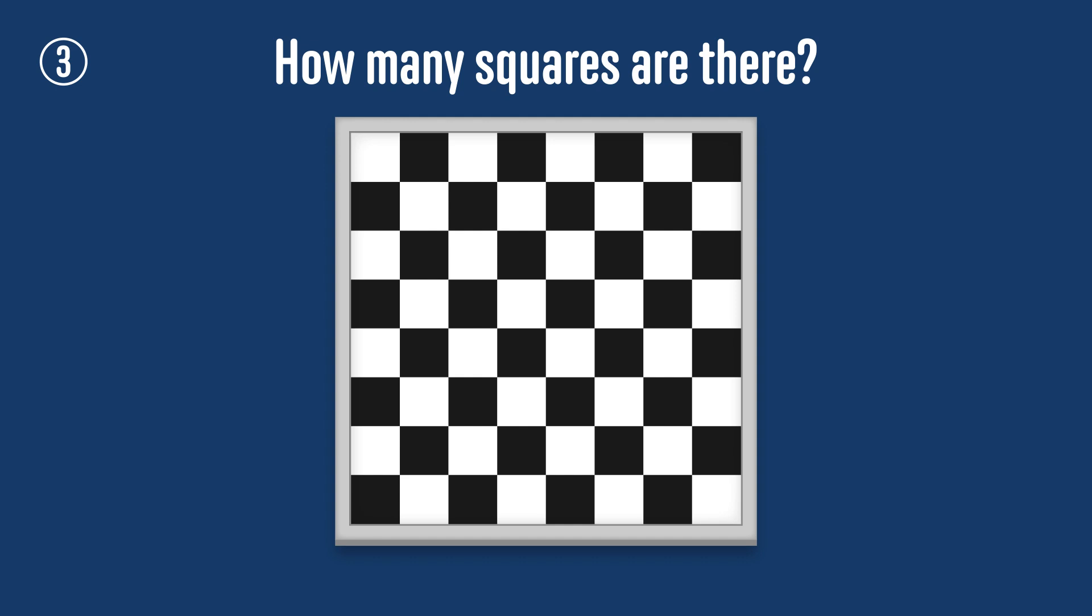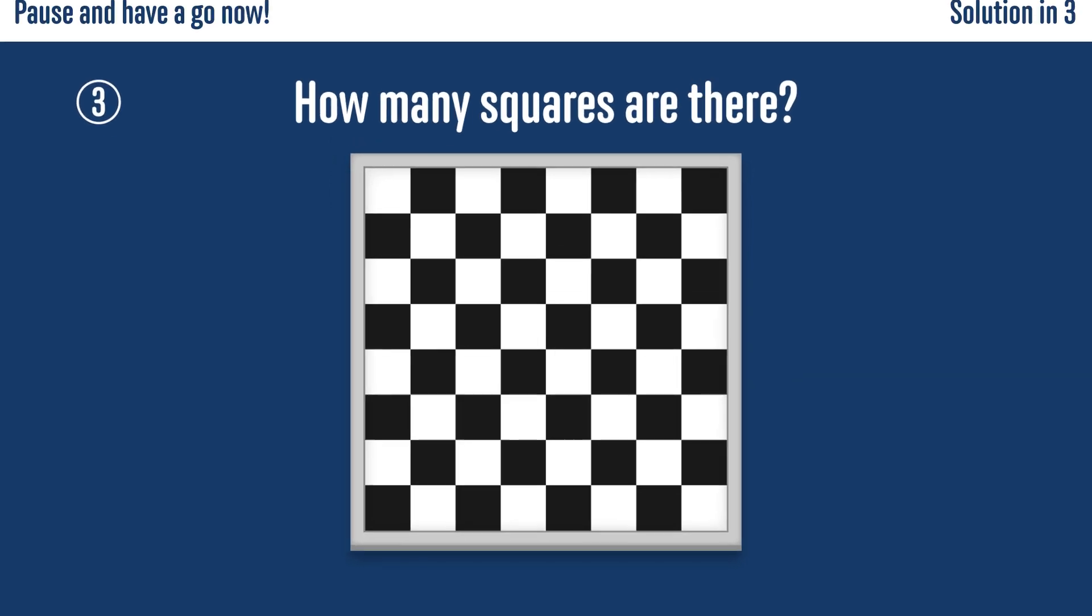How many squares are there on a chessboard? The answer isn't 64. Don't forget to count all of the different sizes of square. This time the answer is a lot bigger, and so you'll want to look for a simpler way to count them than by finding them one by one.